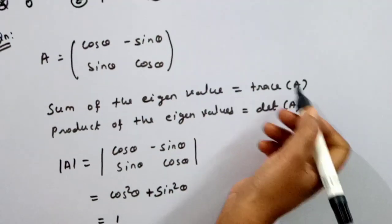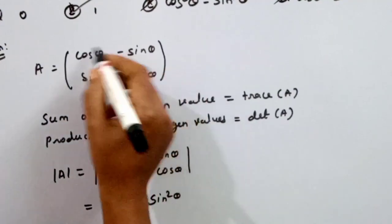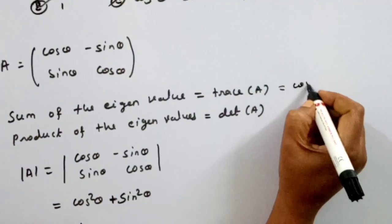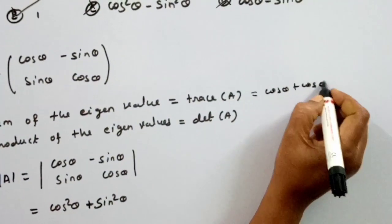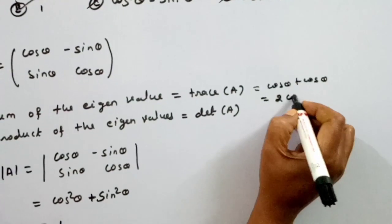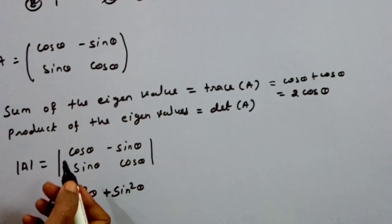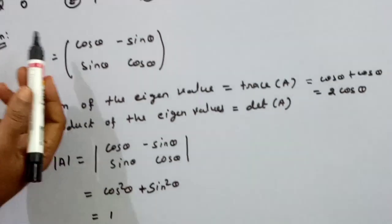We note that the trace of the given matrix is cosθ plus cosθ, which is equal to 2cosθ. We then calculate the product of the eigenvalues using the determinant.